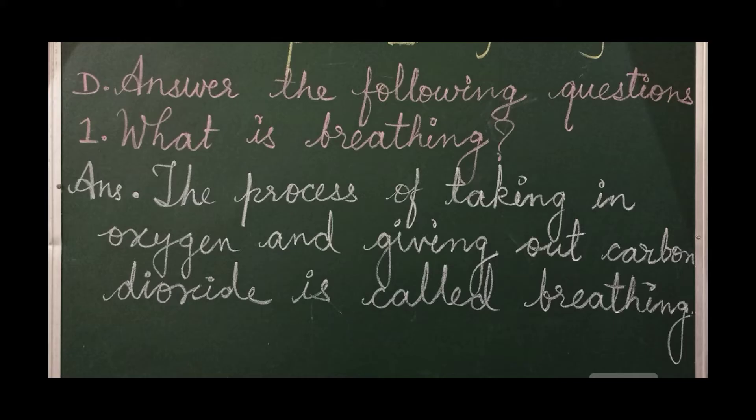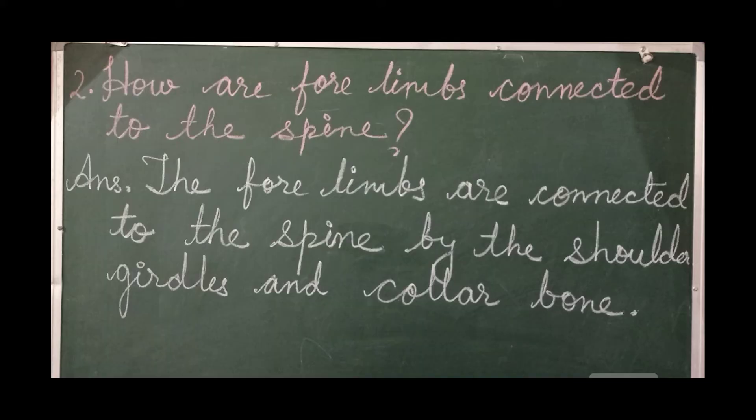Now let's move to Question 2: How are 4 limbs connected to the spine? Answer: The 4 limbs are connected to the spine by the shoulder girdles and collar bones. Collar bones or shoulder girdles se 4 limbs hamare connected hote hain.